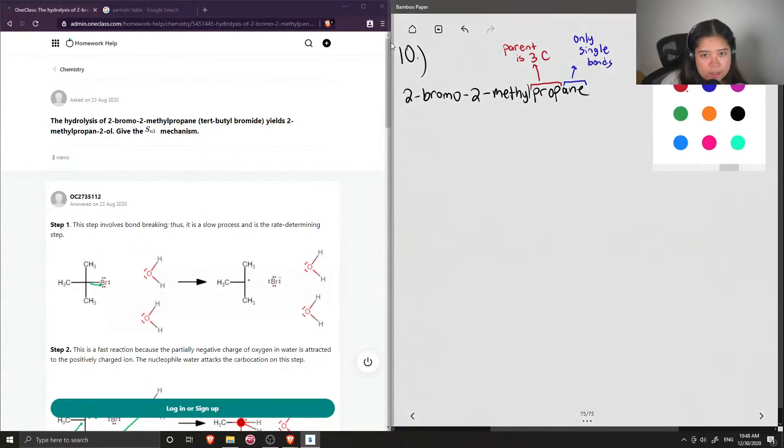If it ended in ene or yne, then it would have double or triple bonds respectively. Okay, so we know our parent chain and now we can see that our substituents is a bromine group, so on carbon 2.